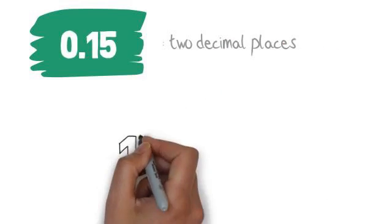Now let's work out 0.15. 0.15 has two decimal places. We therefore know that the denominator will have two zeros. And this will make our fraction fifteen one hundredths.